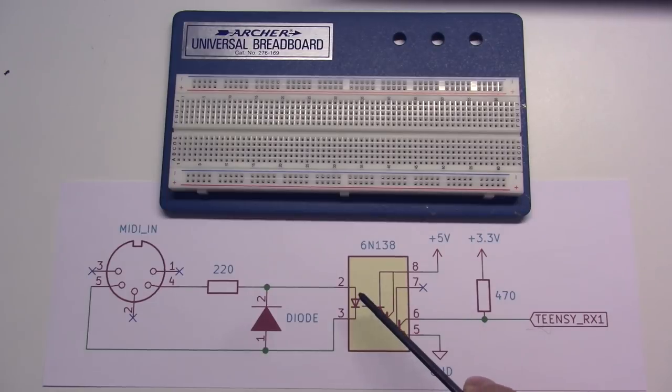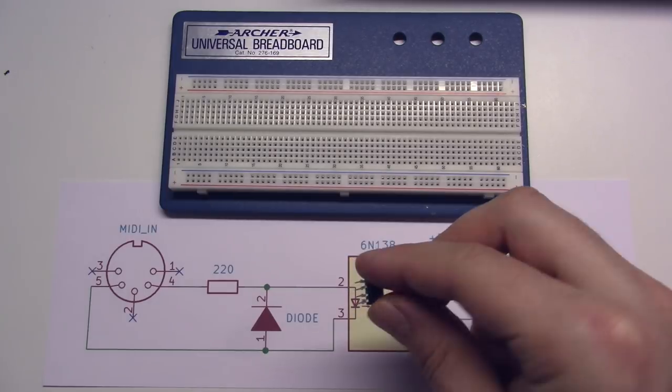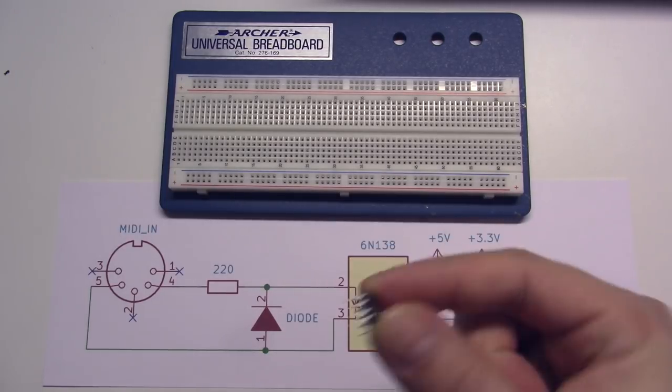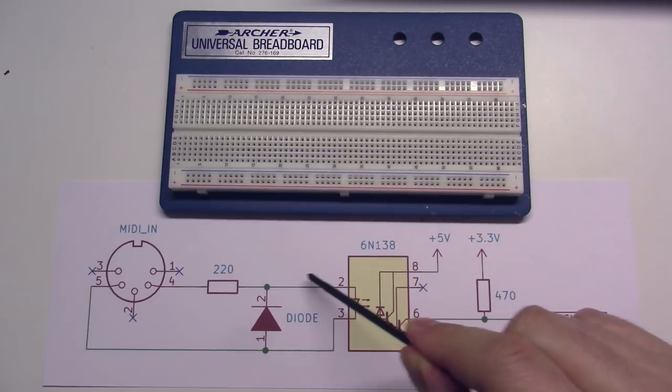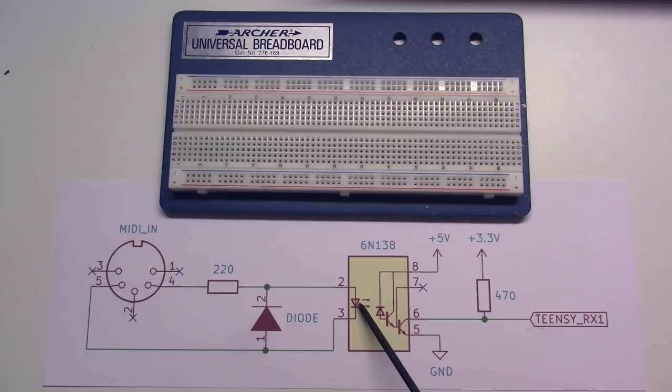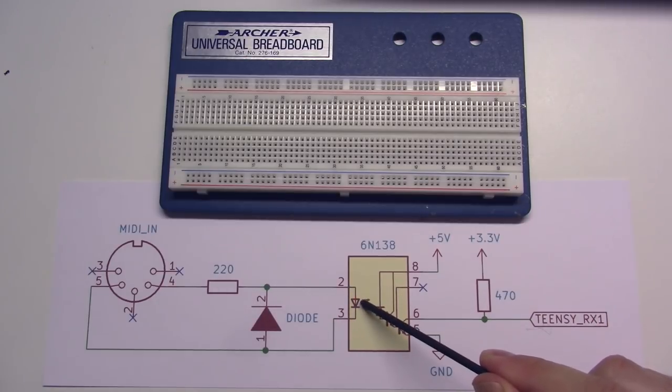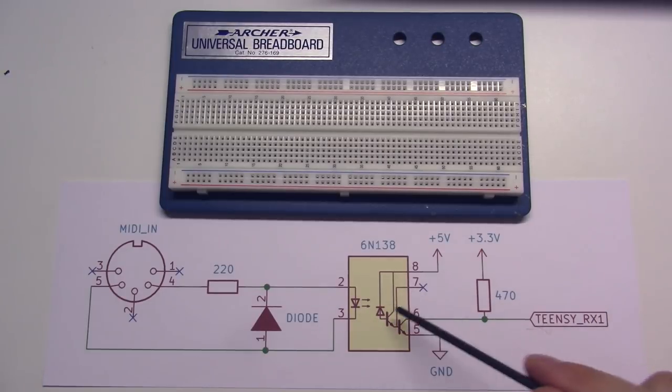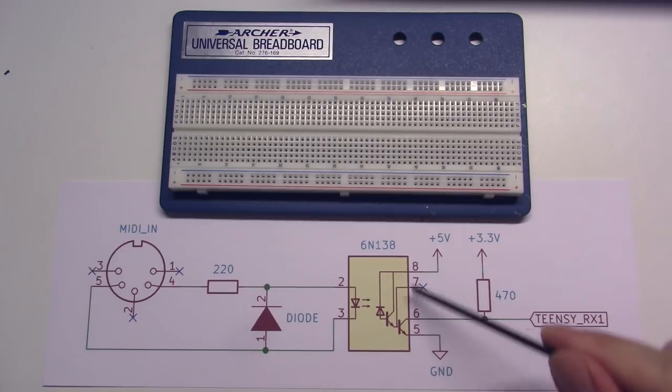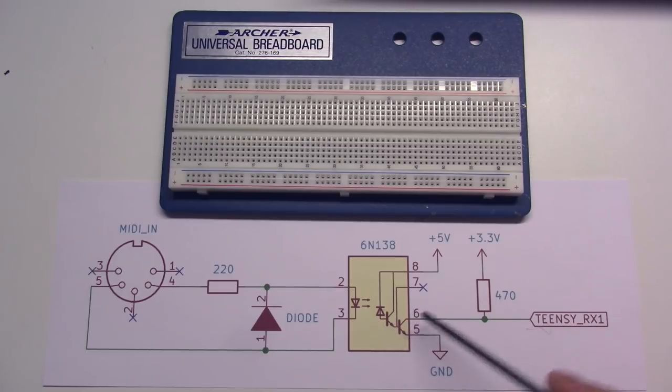So the heart of a MIDI input circuit is this device here, which is called an optocoupler or sometimes an optoisolator. This is the actual device—a little 8-pin DIP chip. Now this is how the optocoupler works: on our input side, we have just a simple LED, and this is actually inside the chip, so you can't see it working. But as current passes through this circuit, it's going to turn this LED on and off. On the other side of the circuit, we have this phototransistor. As the light comes in from the LED, it will turn these transistors on and off, so you get the pulse from the input mirrored on the output.